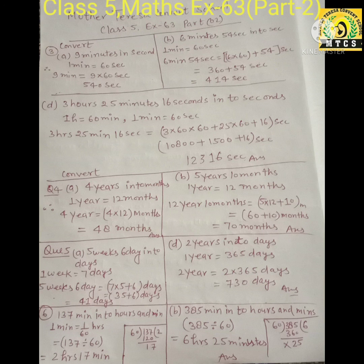Question B: 5 years 10 months into months. First convert 5 years into months: 5 into 12, plus 10 months already in months. So 60 plus 10 is equal to 70 months.